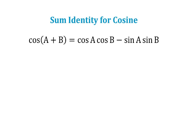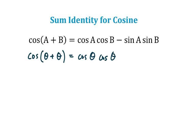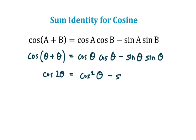What we're going to try is taking the cosine sum identity, but instead of inserting two different angles A and B, let's pass in the same angle twice — theta plus theta. Following what the identity tells us: cosine of theta times cosine of theta, minus sine of theta times sine of theta, because both angles were the same. On the left, this gives us cosine of two theta. On the right, cosine times cosine is cosine squared, and sine times sine is sine squared.